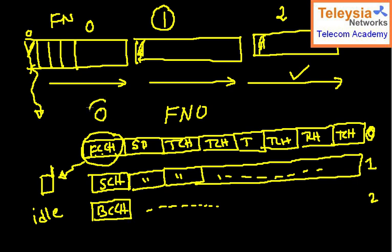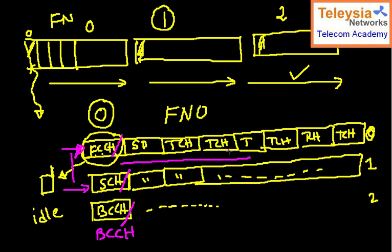Physically, the time slot is zero, but every time logically it is transmitting something different — first it was FCH, second time SCH, third time BCCH. Between two readings of the same time slot, I need to wait for one TDMA frame, which is 4.615 milliseconds. So physically the time slot zero is one physical time slot, but at different times it is radiating different kinds of information.